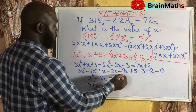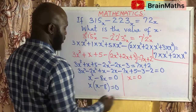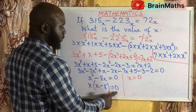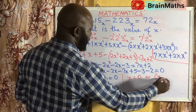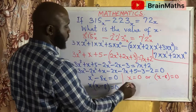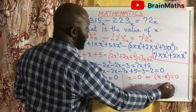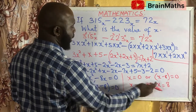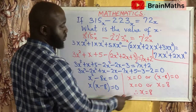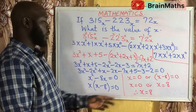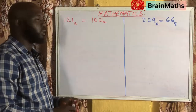Solving further, we have X equals 0, or X minus 8 equals 0, giving X equals 0 or X equals 8. Therefore our real value is X equals 8. Don't forget that there is no such thing as a base of 0.